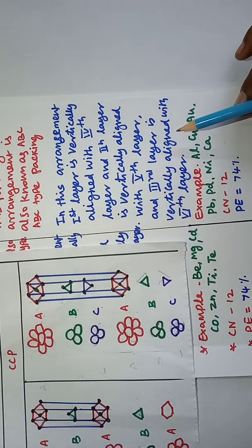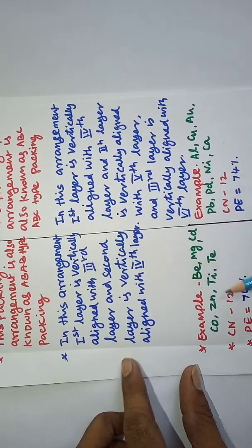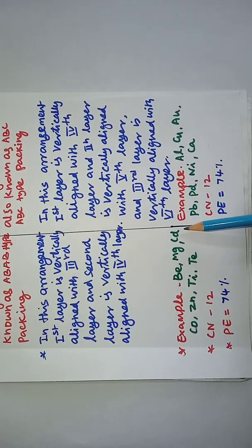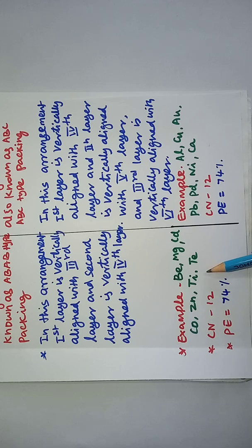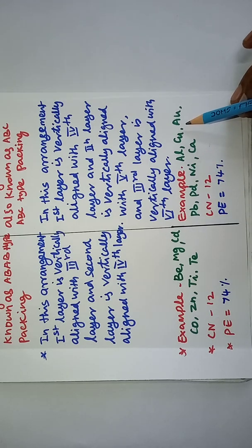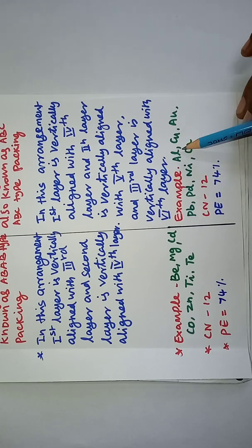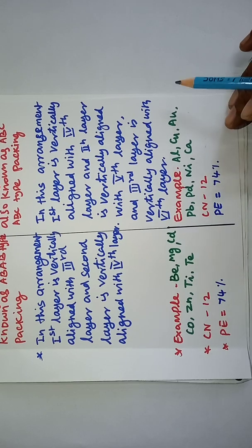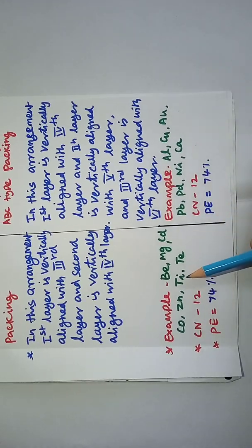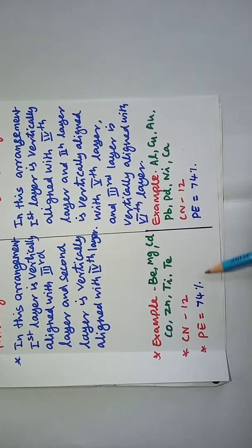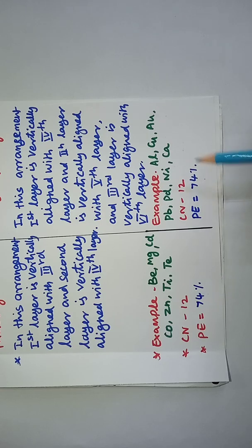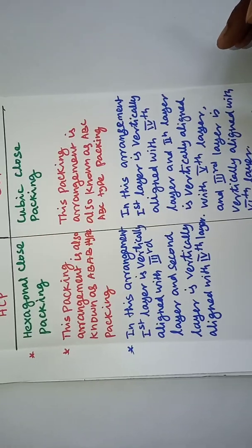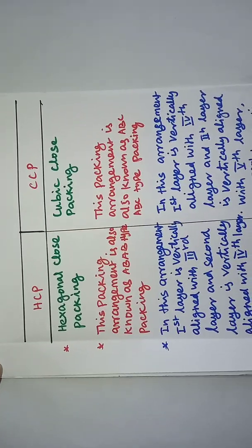It's very important. Examples for HCP — Hexagonal Closed Packing — include beryllium, magnesium, cadmium, cobalt, zinc, titanium, and tellurium. Examples for Cubic Closed Packing include aluminium, copper, gold, lead, palladium, nickel, and calcium. The coordination number for both HCP and CCP are the same, and the packing efficiency for both is also the same: 74%. This is very important.